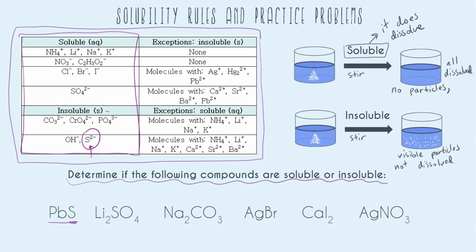The little 's' here just means solid, meaning everything would still be a solid. So our compound is probably going to be insoluble because sulfur is insoluble. But let's check the exceptions first: molecules with NH₄⁺, lithium, sodium, potassium, calcium, strontium, and barium are exceptions — meaning they would be soluble. But we're using lead, and that's not in the exceptions. So lead sulfide is insoluble.